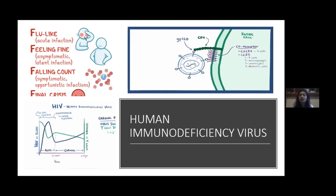After that, the person enters the chronic period, which lasts from 2 to 10 years. During this time, the HIV would have replicated so much that there will be an increase in HIV and decrease in T helper cells — called a falling count — leading to symptomatic or opportunistic infection. And then it will be the final crisis.